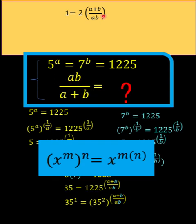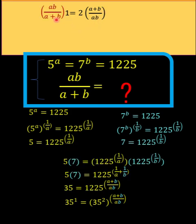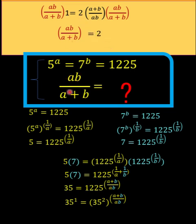Since we want to solve for ab over a plus b — which is the reciprocal of a plus b over ab — we multiply both sides by ab over a plus b. On the left, the product of a plus b over ab and ab over a plus b equals 1, leaving us with ab over a plus b on its own. On the right, 2 times ab over a plus b becomes simply 2. Therefore, ab over a plus b equals 2, which is our final answer.